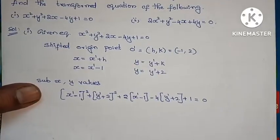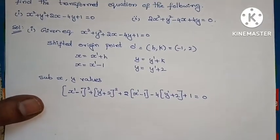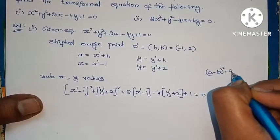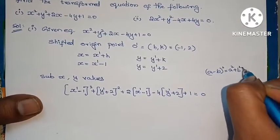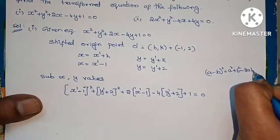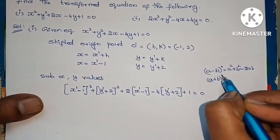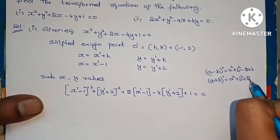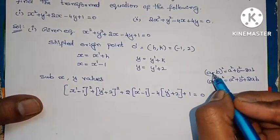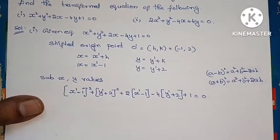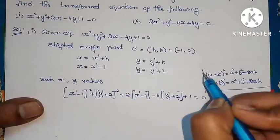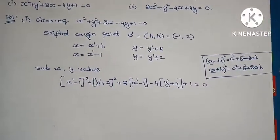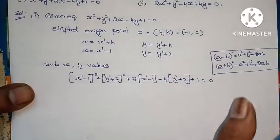Now we apply the formulas: (a minus b) whole square equals a square plus b square minus 2ab, and (a plus b) whole square equals a square plus b square plus 2ab. Apply these formulas and substitute into the equation.